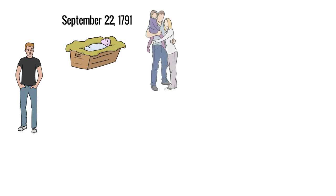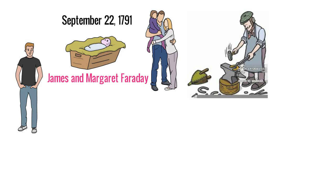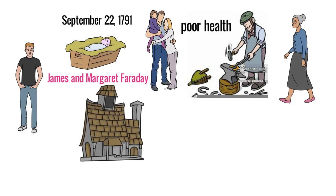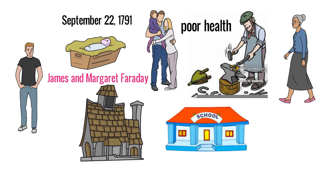He was the third child of James and Margaret Faraday. His father was a blacksmith who suffered poor health. Before marriage, his mother had been a servant. The family lived in a degree of poverty. Michael Faraday attended a local school until he was 13, where he received a basic education.